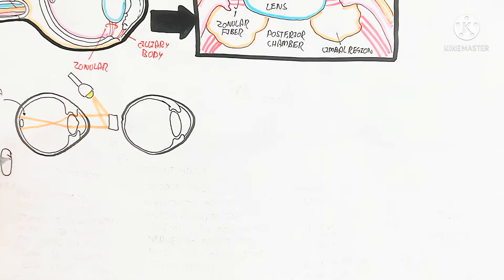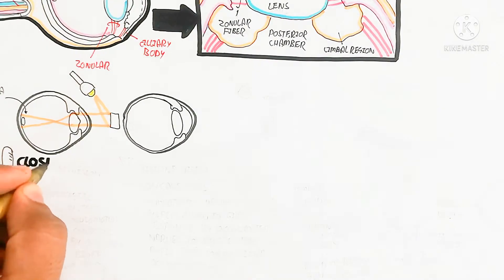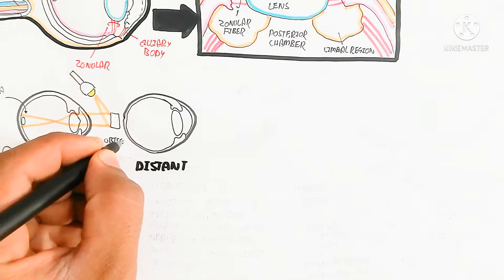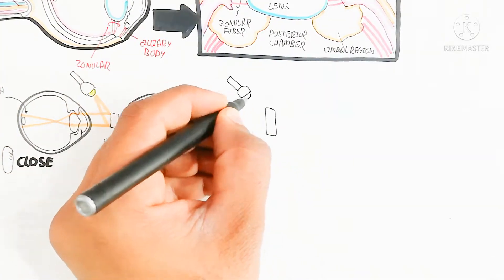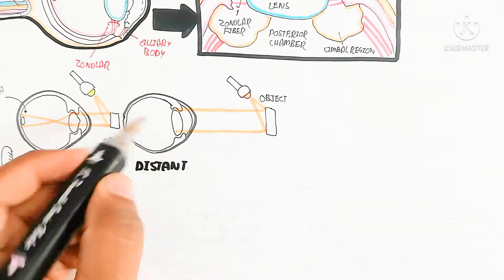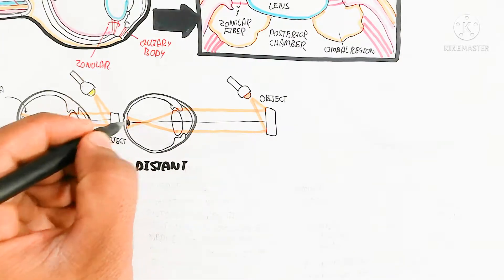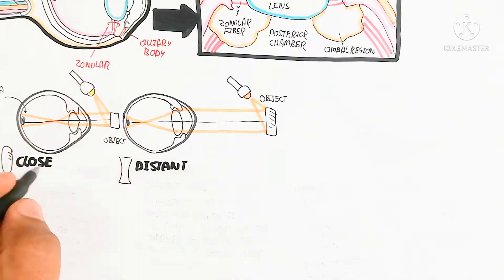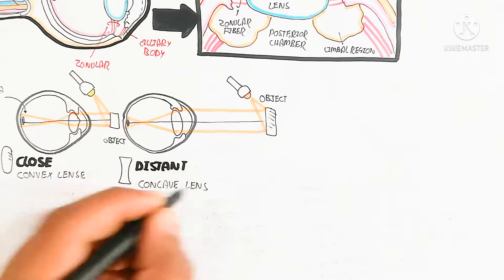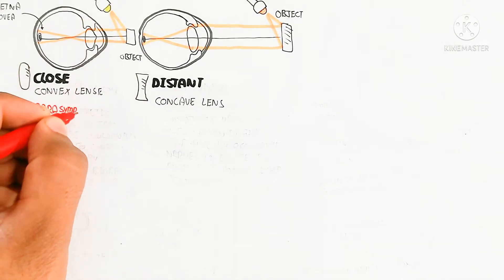For close vision, the lens of the eye will be convex for light absorption at a close focal point. For distant vision, a more concave shape of the lens occurs to make an image on the retina, specifically at the fovea, which contains rod and cone cells — we will discuss those later in this video.